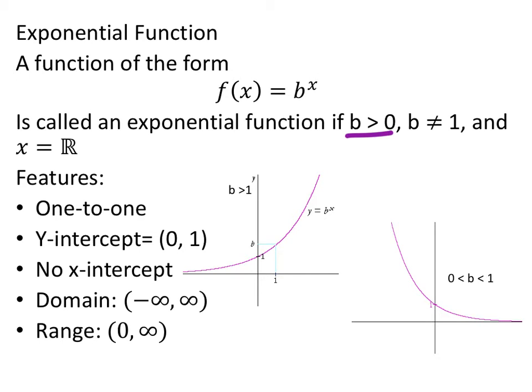So, in order for it to be exponential, b can't be 1, that's why it says that. And x can be any real numbers, that just means that x can be, again, the x is the exponent.